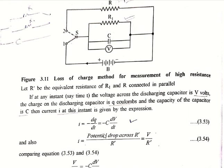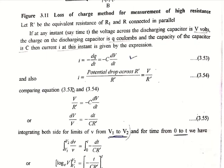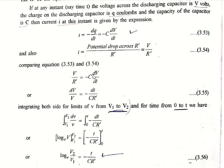Also, in terms of resistance, the current i equals the potential drop across R' divided by R', which is equal to V/R'. Comparing these two expressions for current, we have V/R' = −C·dV/dt. By rearranging this equation, we get dV/V on the left-hand side equal to −dt divided by C·R' on the right-hand side.